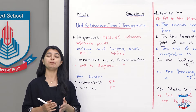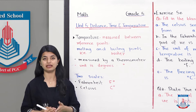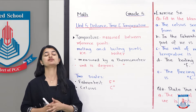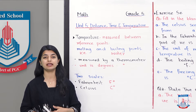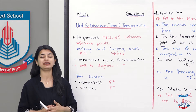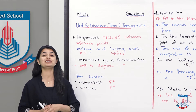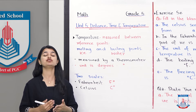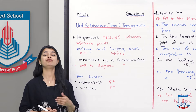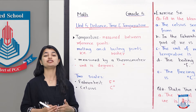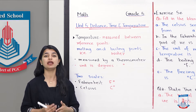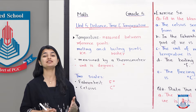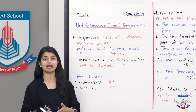Temperature has different units — there are different scales to measure it. One scale we commonly know is Celsius. Above that, there are other scales like Fahrenheit and Kelvin. For now, we will focus only on Celsius and Fahrenheit.